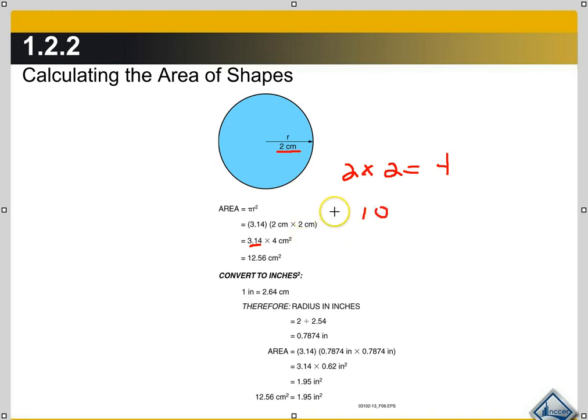All right, so in this formula our radius is two centimeters. So it is π, 3.14, times four, which is two squared, and it equals 12.56 square centimeters. And if this just happened to be inches, then it would be 12.56 square inches.